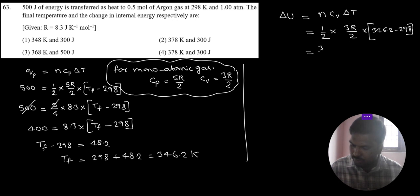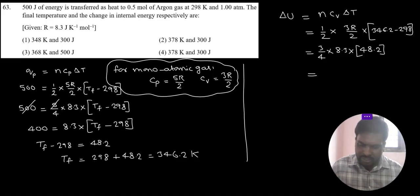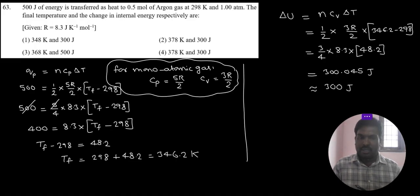Now 3 by 4, R value 8.3 into this difference is 48.2. So if we simplify, we will get 300.045 Joule means approximate value 300 Joule. So then 300 Joule, that is change in internal energy.